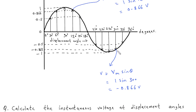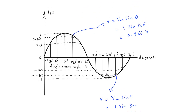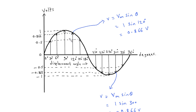Similarly, at this point V is equal to Vm sin theta. Here the displacement angle is 300 degrees, so this gives minus 0.866 volt. Vm is peak voltage; peak voltage is 1. This is the peak voltage, 1.